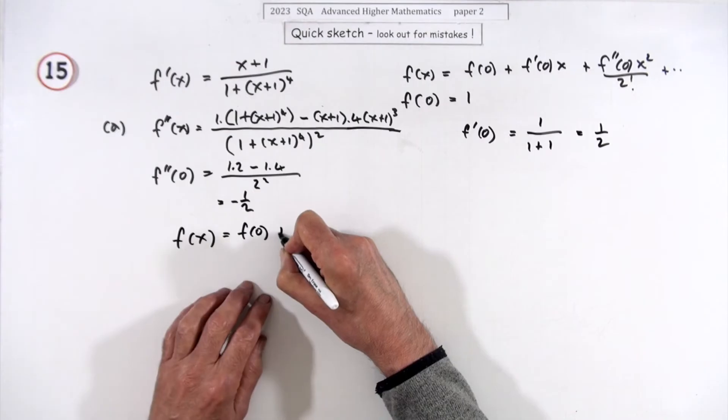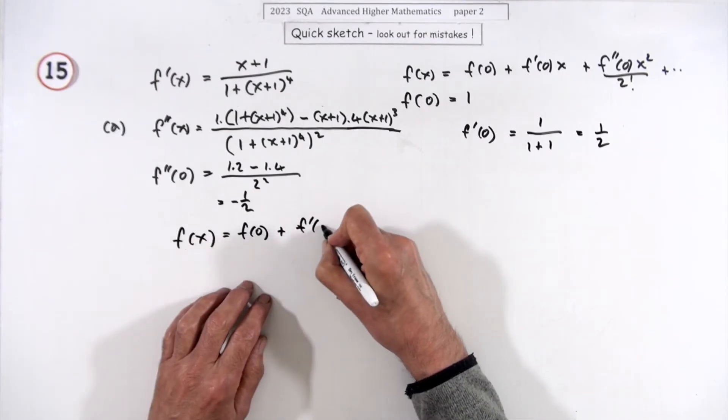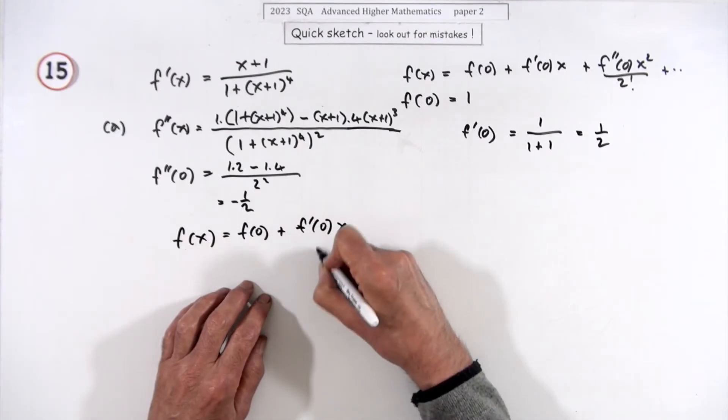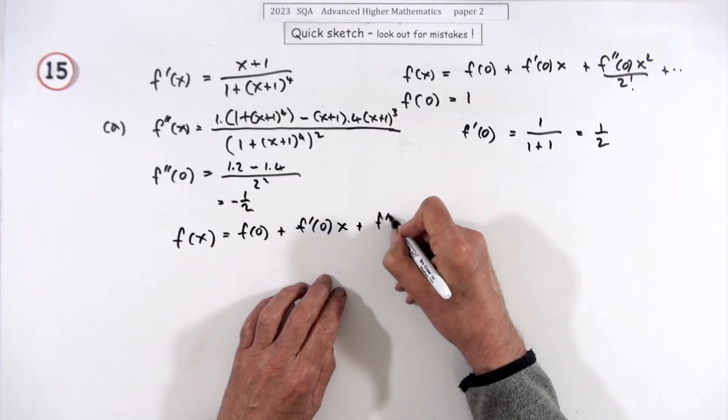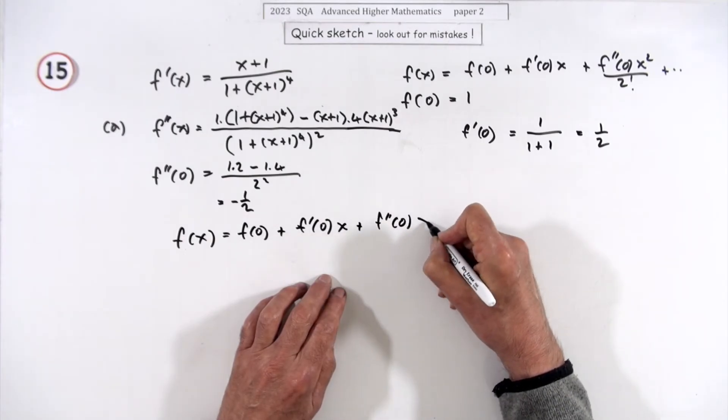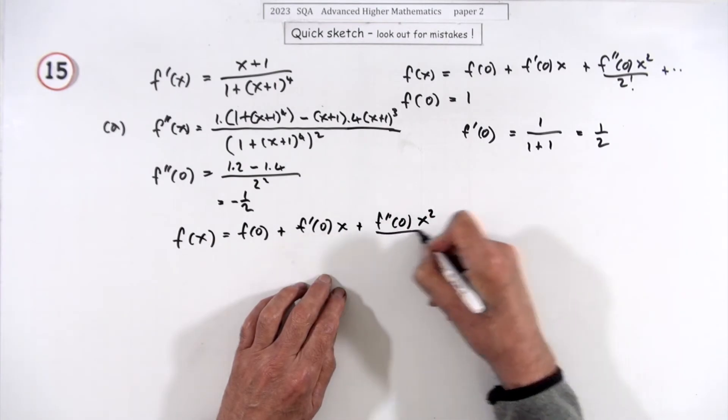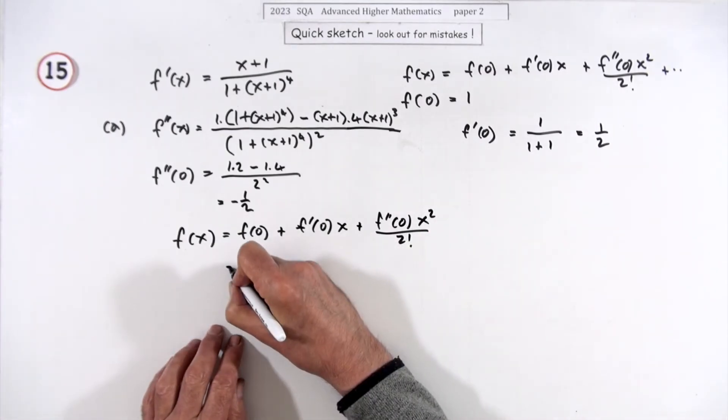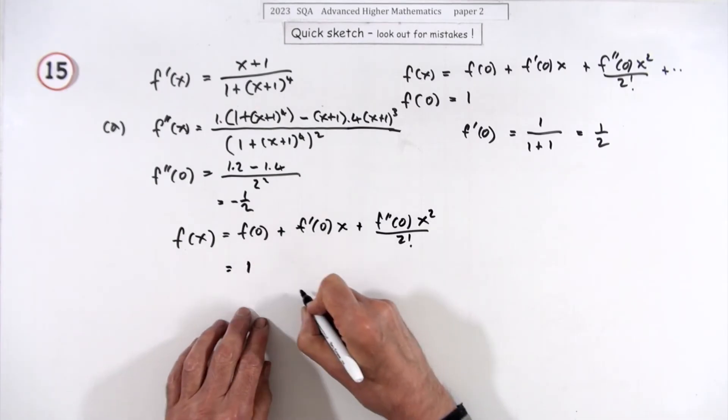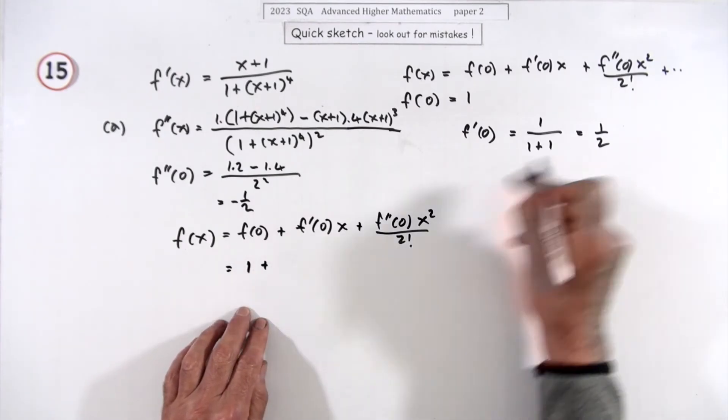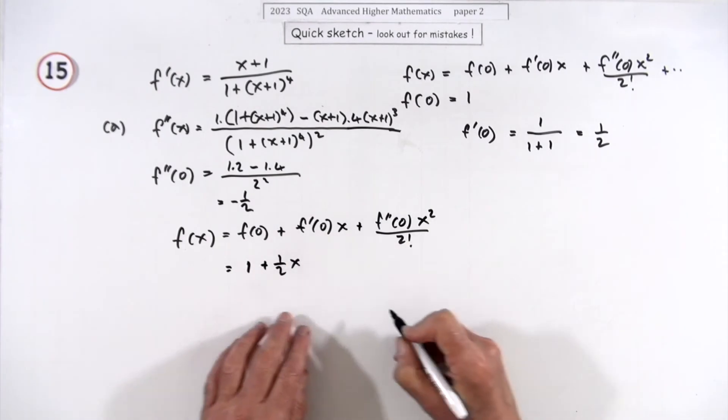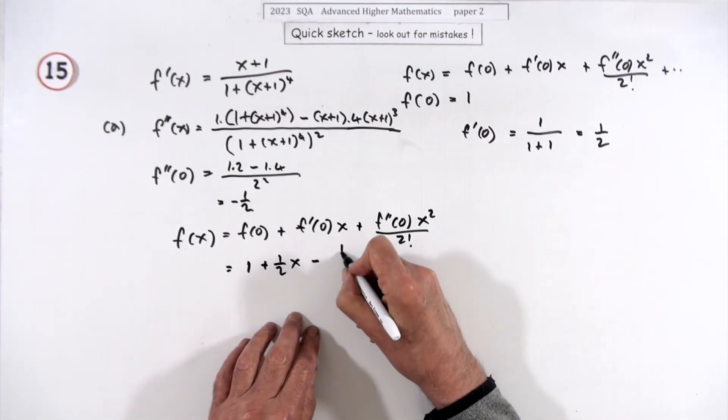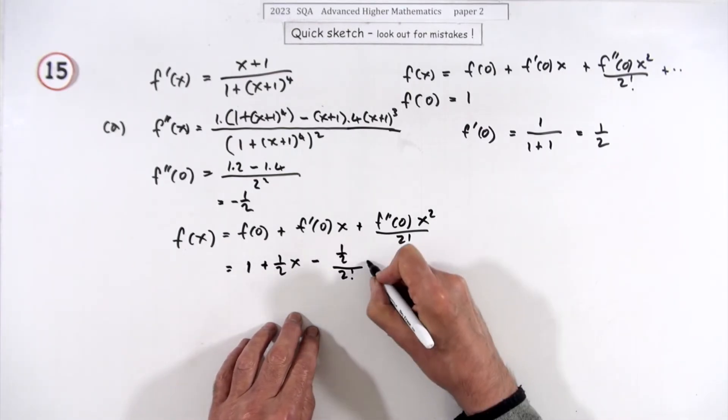f(0) which I know plus f'(0) which I know over 1!, plus f''(0) which I know but over 2!. I don't need any more because it doesn't ask for more.